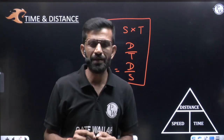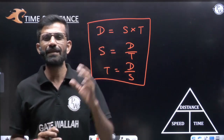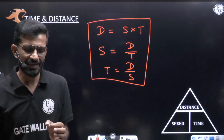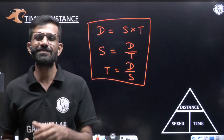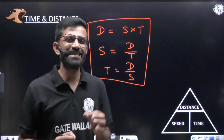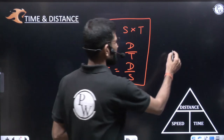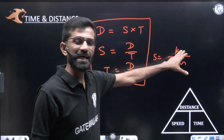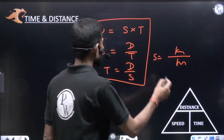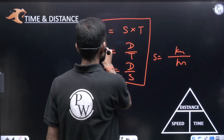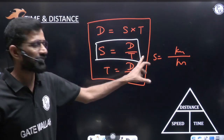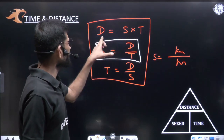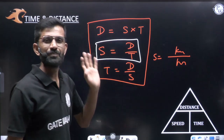If you are confused about how to use these formulas, here's a simple way to remember. When I ask the speed of a vehicle, you say '60 km per hour.' Kilometer is distance and hour is time — so you already said speed equals distance by time. From that, distance equals speed into time, and time equals distance by speed.